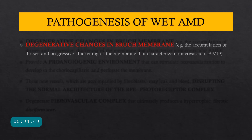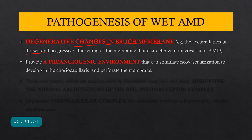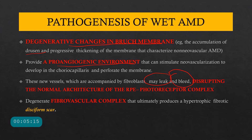The pathogenesis of wet ARMD: first, degenerative changes occur in Bruch's membrane due to drusen accumulation and membrane thickening, creating a pro-angiogenic environment that stimulates neovascularization from the choriocapillaries. These vessels perforate Bruch's membrane bringing fibroblasts along. The new vessels are fragile — they can leak, bleed, and cause exudation, destroying the normal architecture of the RPE and photoreceptors. Finally, when they degenerate, the fibrous and vascular tissue forms a hypertrophic fibrotic scar called a disciform scar. Disciform scar is a feature of wet AMD, whereas geographical atrophy is a feature of dry AMD.